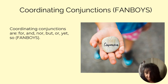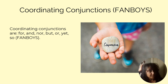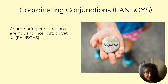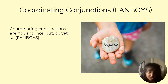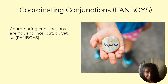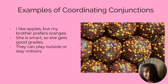Coordinating conjunctions — many ways to remember which particular words we're talking about — include using the word FANBOYS, and each letter in that word represents a coordinating conjunction: For, And, Nor, But, Or, Yet, So. Here are some examples of coordinating conjunctions — listen to them as I read the sentences.